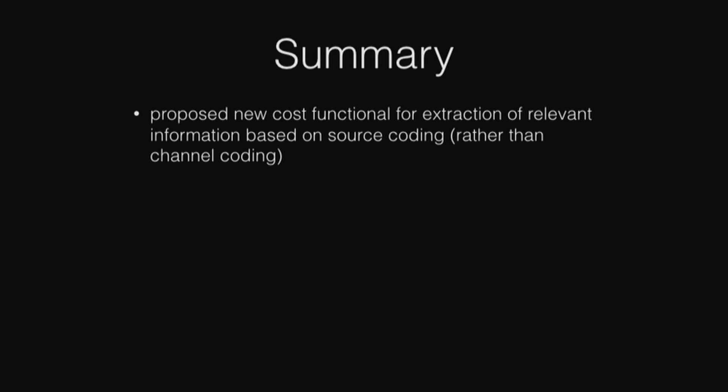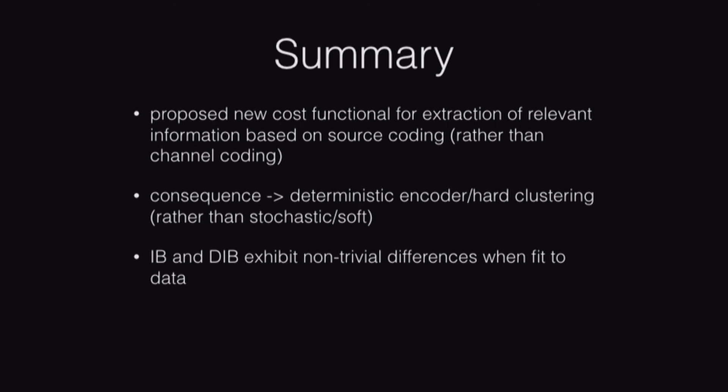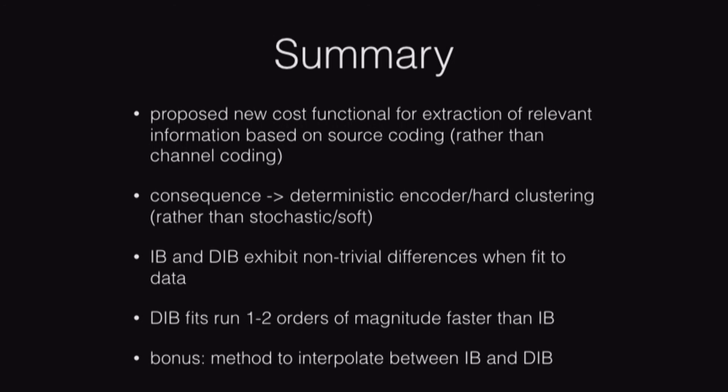Just to summarize quickly, we proposed a new cost functional for the extraction of relevant information based on source coding rather than the channel coding approach. As a consequence of that, we got out an algorithm that provided a hard clustering or deterministic encoder rather than a soft clustering or stochastic encoder. It's important to recognize that we did not seek out to get a hard clustering. We didn't just say, let's do a hard clustering version of this. We made a change to an optimization criteria, and that's the solution we get out. That's a result. The two algorithms exhibit non-trivial differences and fit the data, especially if you look on the right plane. The algorithm we proposed runs faster. And finally, I didn't discuss this during the presentation, but that generalized method that we used to derive the solution to DIB, that had some parameter which basically allows you to interpolate between the soft clustering and hard clustering. So you can actually use that to do things that are in between these two algorithms, in between these two extremes. That's something we're experimenting with now, but I didn't throw it in here. I didn't have enough time.